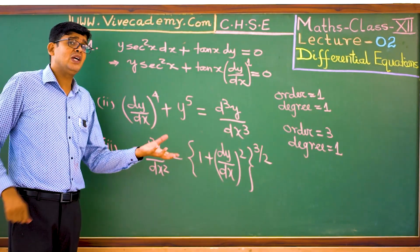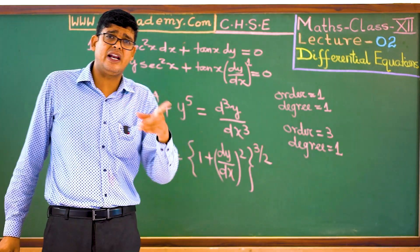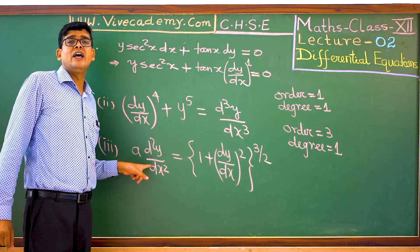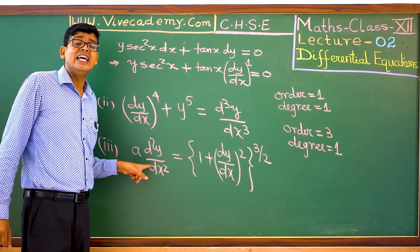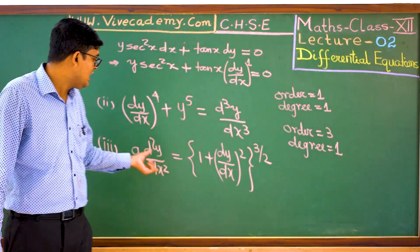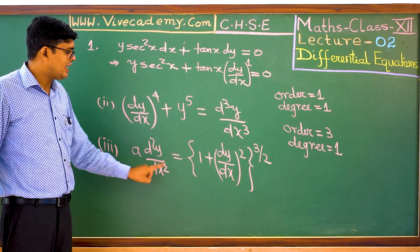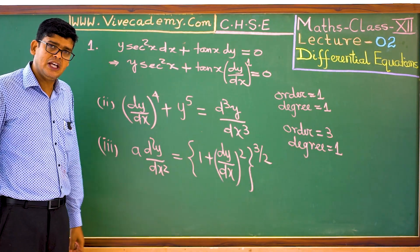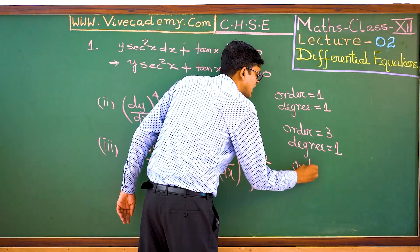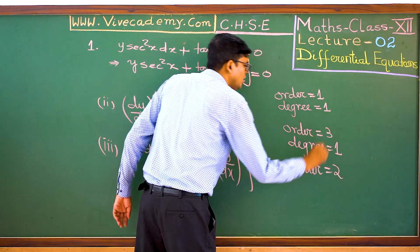What is the maximum number of times y has been differentiated? The answer is 2. The order is 2. It has been differentiated 2 times, so the order is equal to 2.